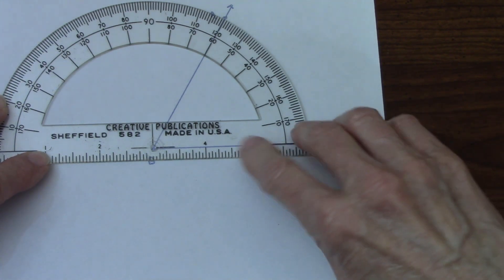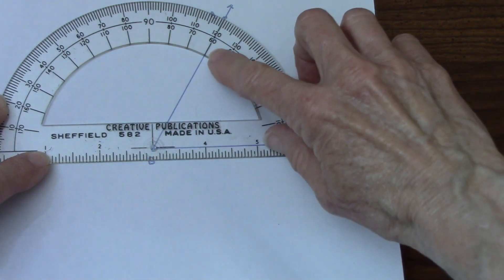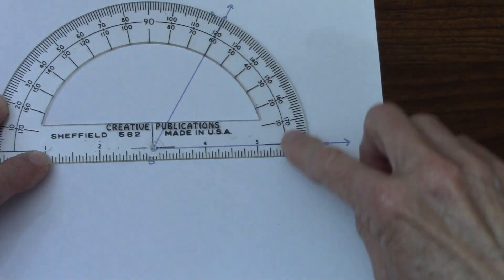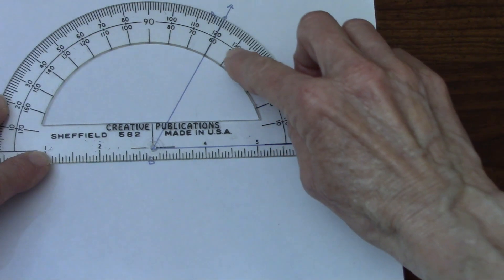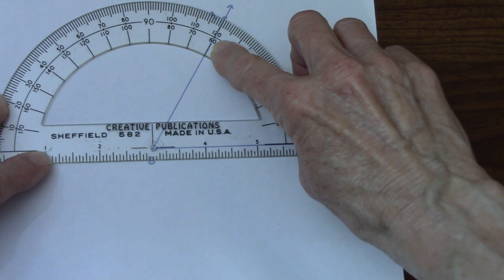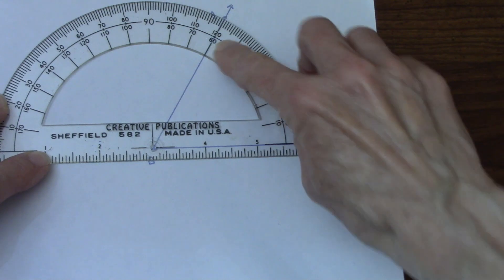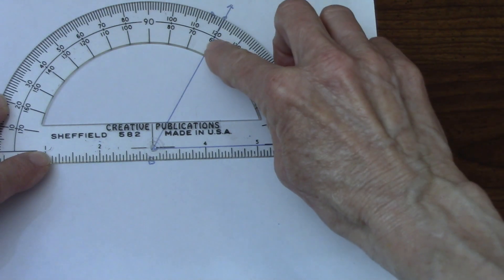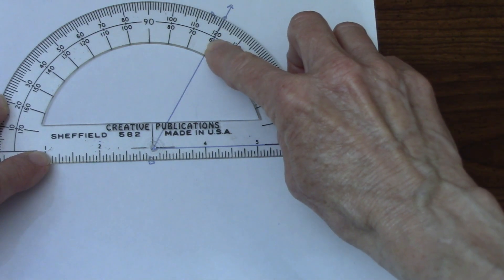I can see right here it goes over to sixty because I'm going to measure from zero and it opens up. So I know I'm going to use the sixty because that's how I'm measuring from zero as it's increasing.